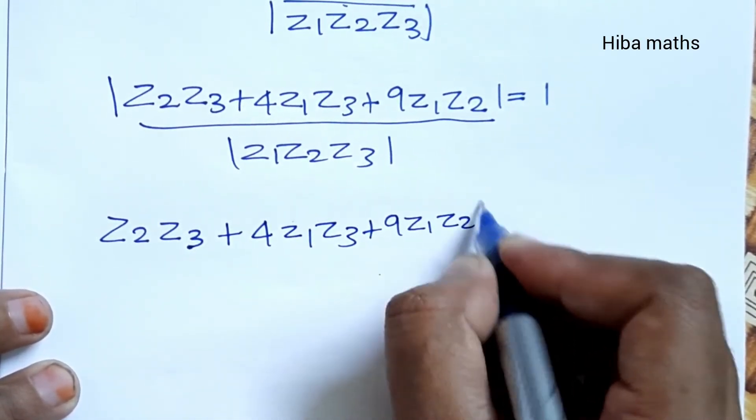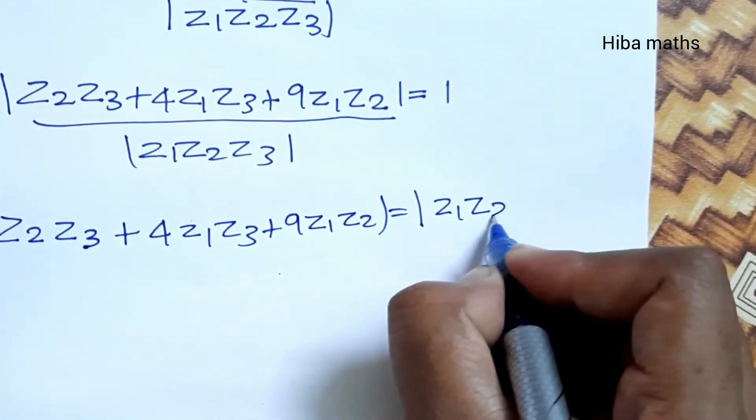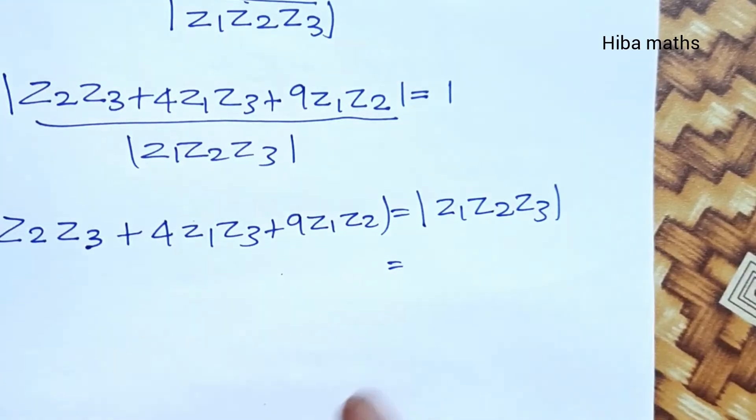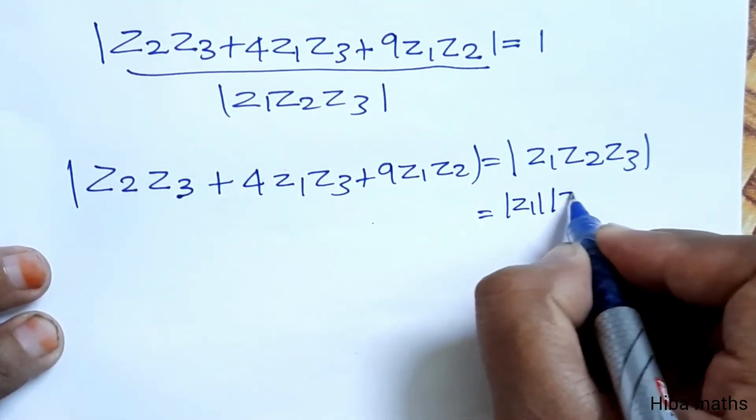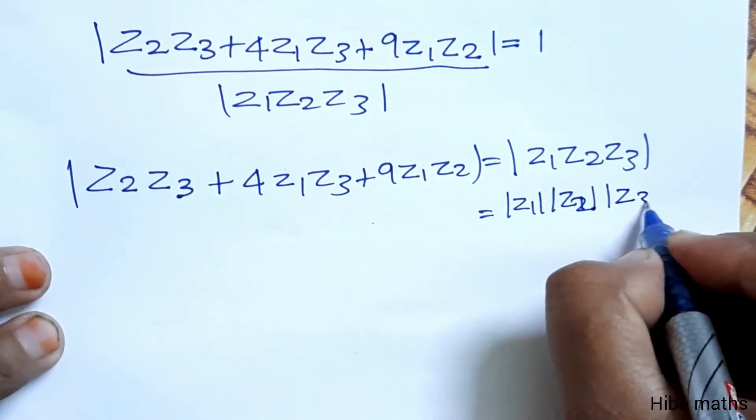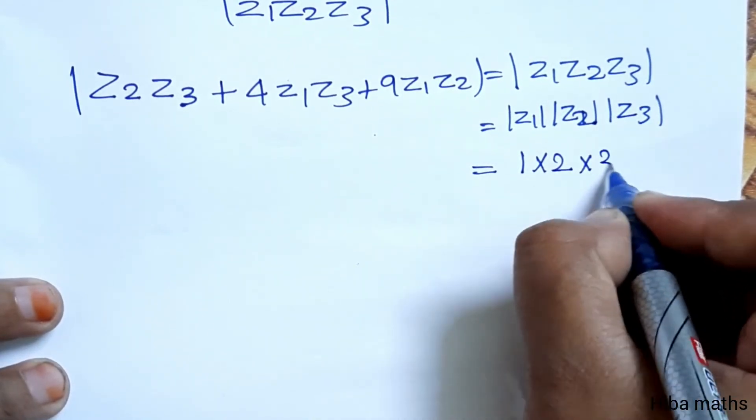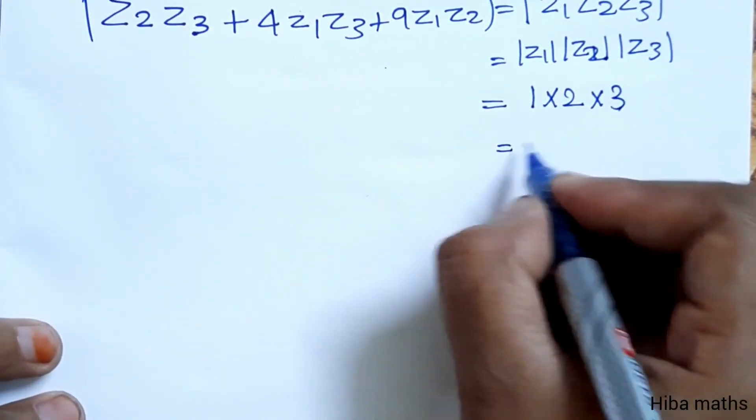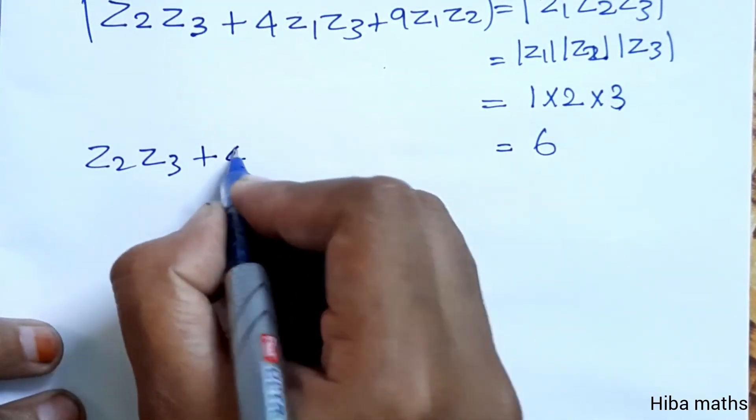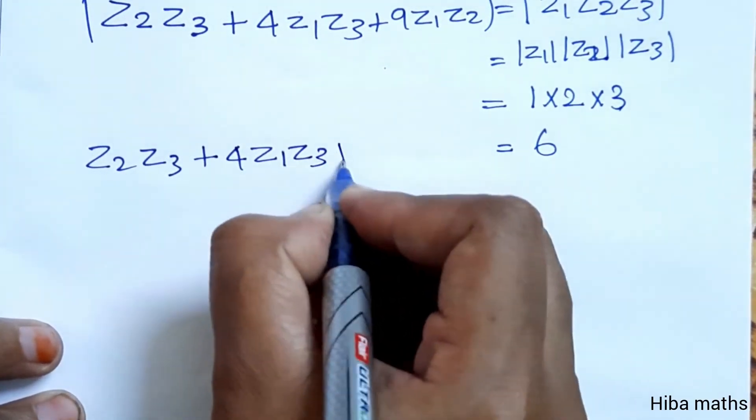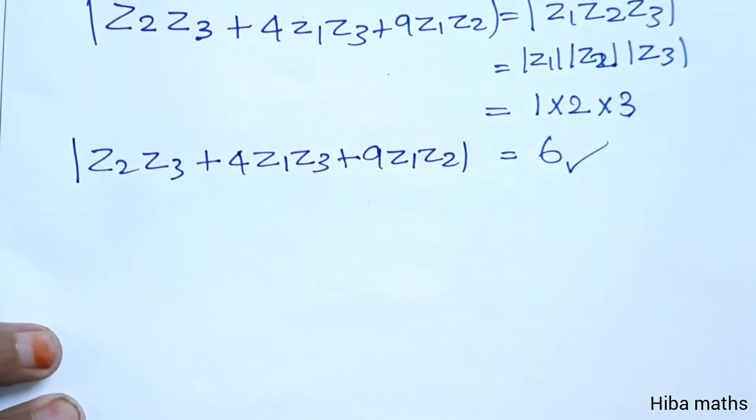Modulus of Z1Z2Z3 equals modulus of Z1 times modulus of Z2 times modulus of Z3, which equals 1 times 2 times 3, equals 6. Therefore, Z2Z3 plus 4Z1Z3 plus 9Z1Z2 modulus is equal to 6. This is what we needed to prove.